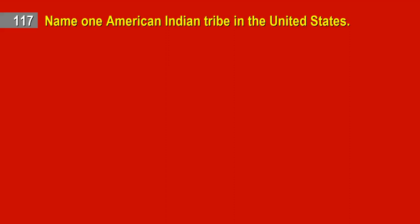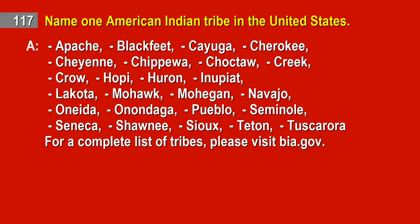Question 117. Name one American Indian tribe in the United States. Answer: Apache, Blackfeet, Cayuga, Cherokee, Cheyenne, Chippewa, Choctaw, Creek, Crow, Hopi, Huron, Inupiat, Lakota, Mohawk, Mohegan, Navajo, Oneida, Onondaga, Pueblo, Seminole, Seneca, Shawnee, Sioux, Teton, Tuscarora. For a complete list of tribes, please visit bia.gov.